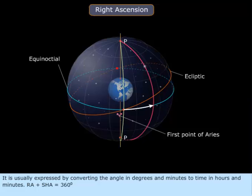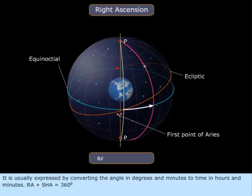It is usually expressed by converting the angle in degrees and minutes to time in hours and minutes. RA plus SHA equals 360 degrees.